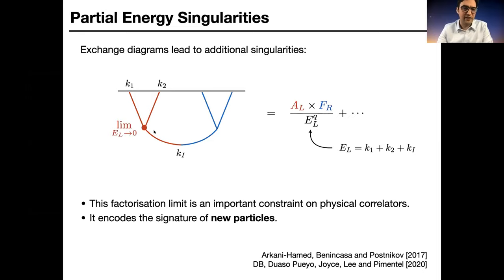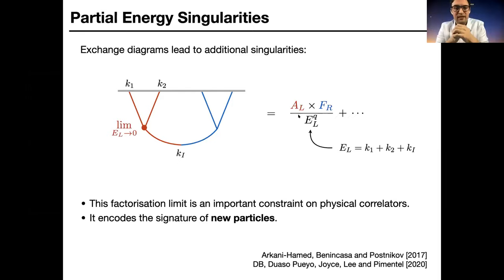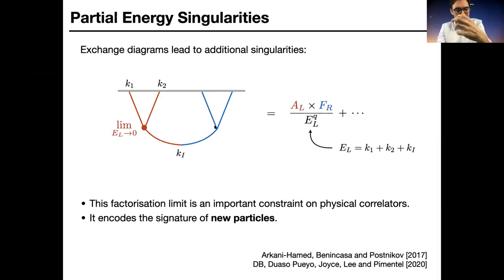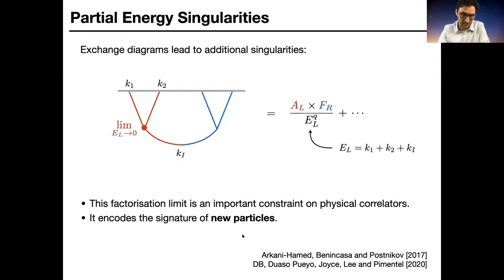When you have diagrams with exchanges, there are additional singularities: whenever a subset of energies is conserved, you get a singularity at the position of E_left going to zero — the sum of energies entering the left vertex. On this singularity the correlator factorizes, much like in a tree-level exchange amplitude, but now into a scattering amplitude on the left and a correlator on the right. The left vertex, with energy taken to zero, corresponds to dragging that vertex to flat space, while the other vertex remains a cosmological correlator. This factorization encodes the signature of new particles — seeing these singularities indicates new particles were present in the exchange.